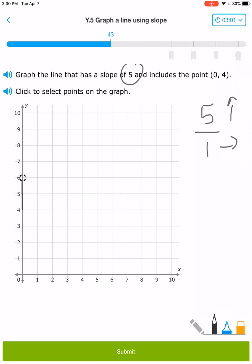Up 5: 1, 2, 3, 4, 5, over 1. And so there's my equation, or there's my line.